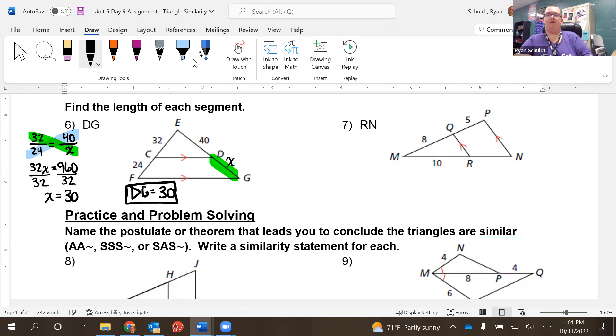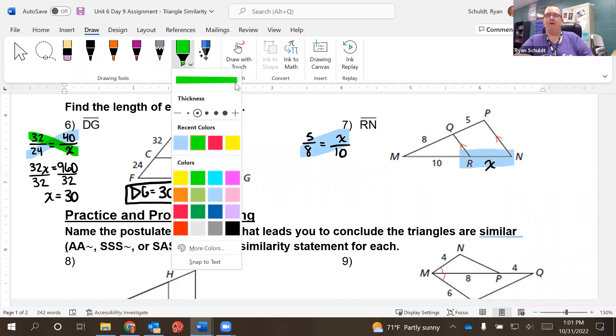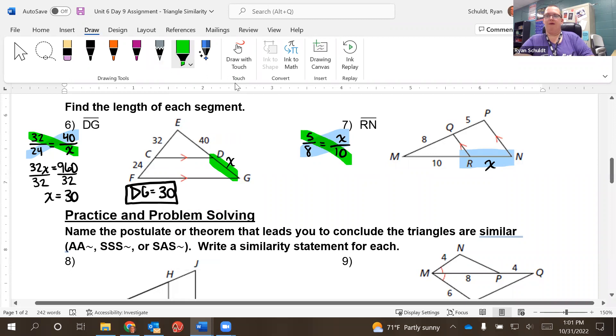Okay. Now for seven, RN. There's our RN right there. That one's X. So five over eight equals X over 10. Cross multiply. Eight times X equals five times 10. So 8X equals 50. Divide by eight.